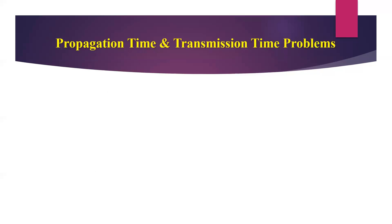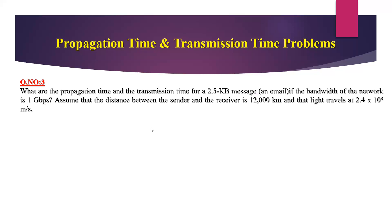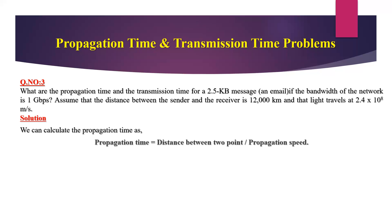Third, we have to calculate both propagation time and transmission time. Question number three: what are the propagation time and the transmission time for a 2.5 kilobyte message — for example, if you send a mail from your system to another system? If the bandwidth of the network is 1 Gbps, assume the distance between sender and receiver is 12,000 kilometers and light travels at 2.4 × 10⁸ meters per second in cable. The propagation time formula is: distance between two points divided by propagation speed.